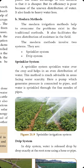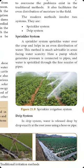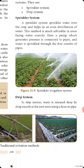In modern methods, there are two systems: the sprinkler system and the drip system. A sprinkler system sprinkles water over the crop and helps in the even distribution of water. This method is much advanced in areas facing water scarcity.